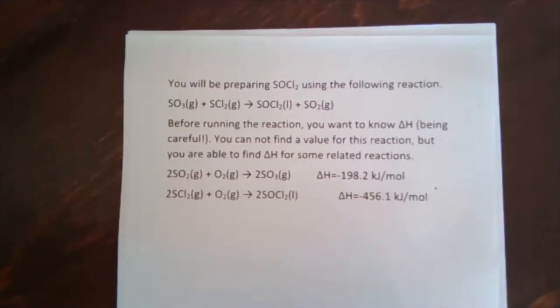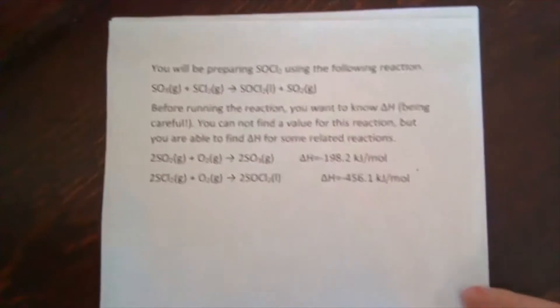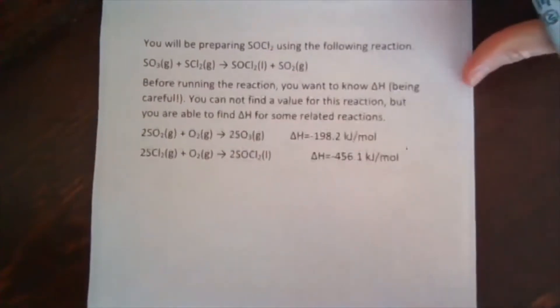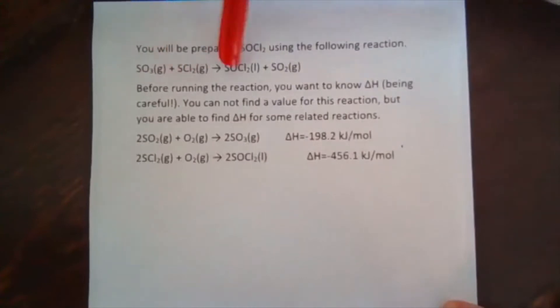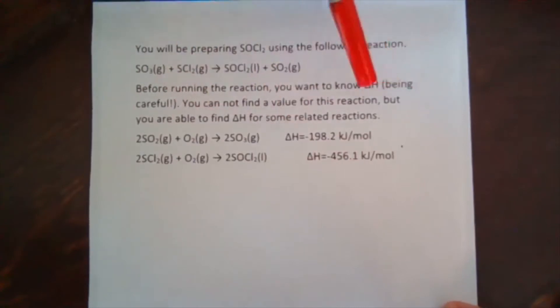All right, so let's do an example where we're going to put all of this Hess's Law ideas together. Get about as complicated as you can. You'll be preparing SOCl2 using the following reaction: SO3 gas plus SCl2 gas becomes SOCl2 plus SO2 gas. Before running the reaction, you want to know delta H. You cannot find a value for this reaction, but you are able to find delta H for some related reactions.